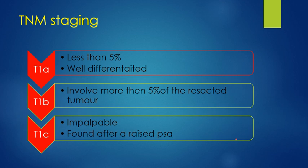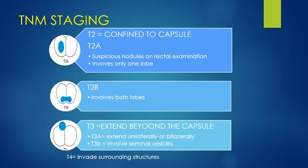In the TNM staging: T1a involves less than 5% of the resected tumor and is well differentiated; T1b involves more than 5% of the resected tumor; T1c is impalpable and found after a raised PSA. The T2 stage is confined to the capsule — the tumor will not invade the capsule. T2a involves only one lobe, determined by rectal examination when suspicious nodules are felt.